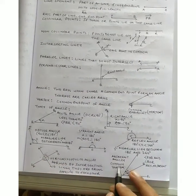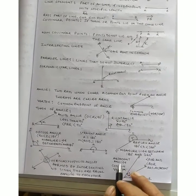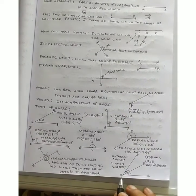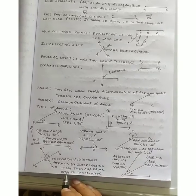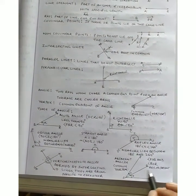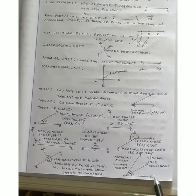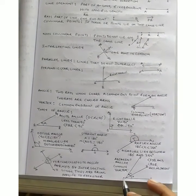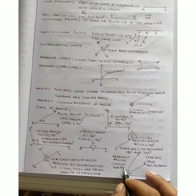Now adjacent angles. Do angles ko hum adjacent kab kehte hain jab unka vertex common ho. Vertex common ho. Yahan par jaise POQ and QOR are adjacent angles, and they have a common vertex O. This is an adjacent angle.